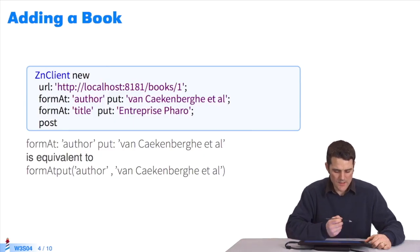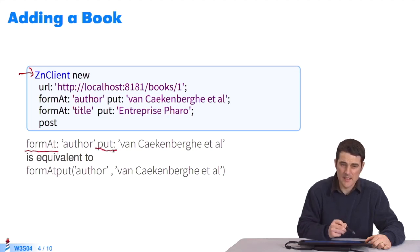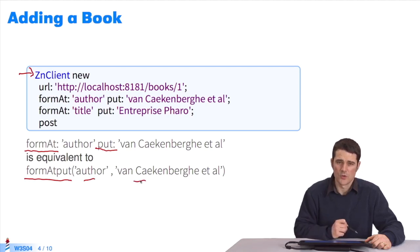I will give you another example, another request built with Pharo and ZnClient. You instantiate an object ZnClient. You send messages using cascades. And then you see something we have already studied. In Pharo, we have keyword messages, meaning that the method name is form-at-put. This is equivalent in typical Java syntax to form-at-put. The method name is all attached and I put all the arguments between parentheses.